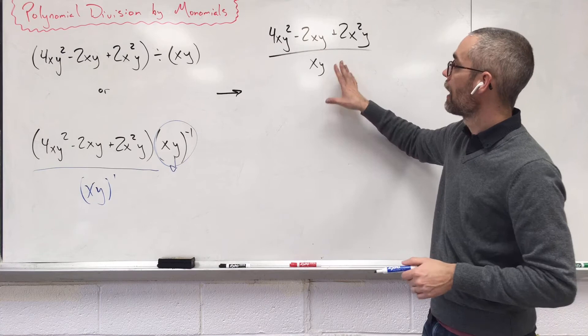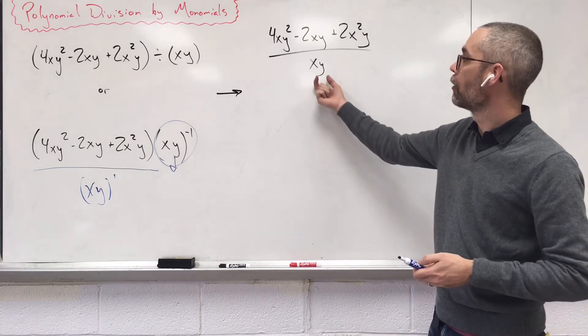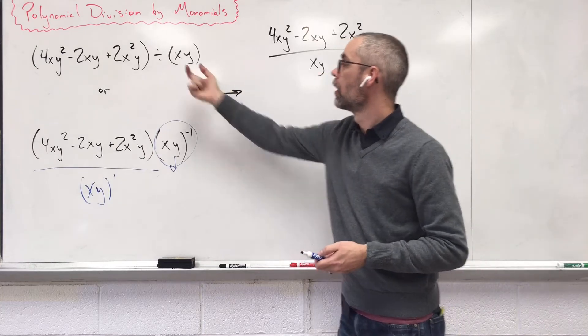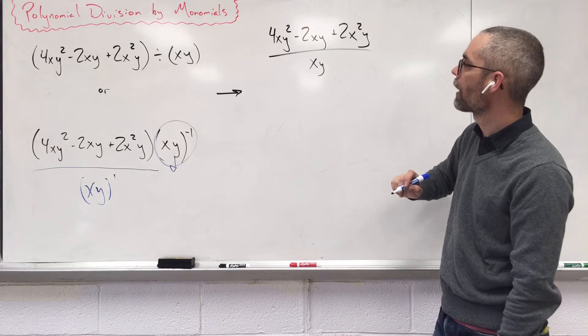Now I want to take this and break it up so it's even easier. So when we divide by a monomial, that's one group, no pluses or minuses down there, I want to create three separate fractions.